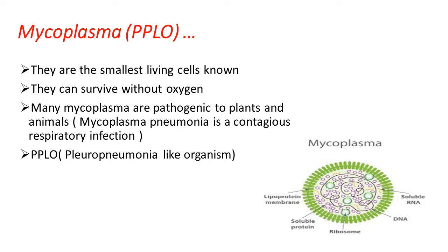Because of the disease caused by mycoplasma, this organism is named pleuro pneumonia-like organism, because it causes pneumonia-like disease in animals. So the another name of mycoplasma is pleuro pneumonia-like organism, abbreviated as PPLO.